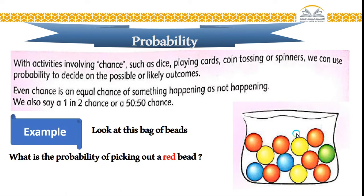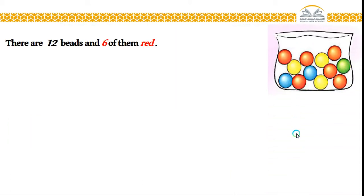Even chance is an equal chance of something happening as not happening. We also say a one in two chance or 50-50 chance. Like this bag contains many different beads. My question: what is the probability of picking out a red bead? It's possible to take at first time this bead, or maybe this bead, or maybe this green bead.